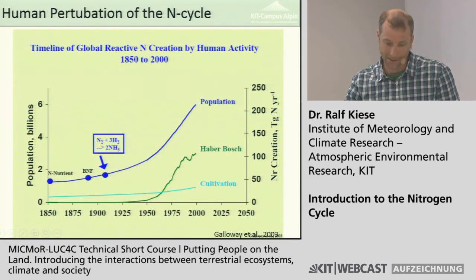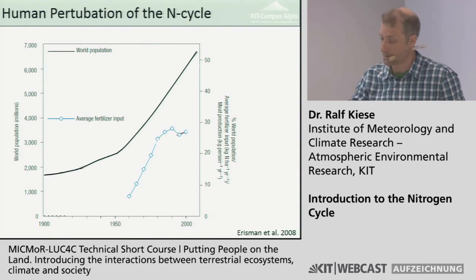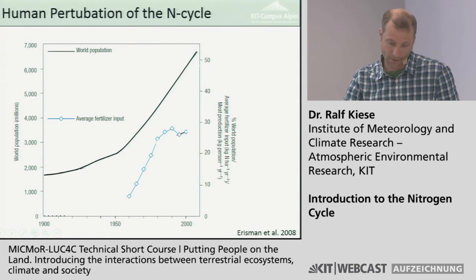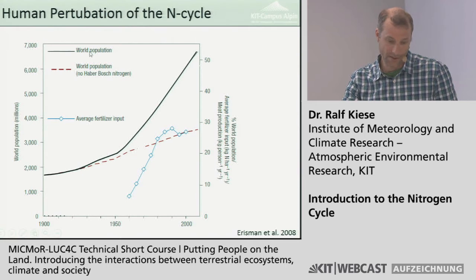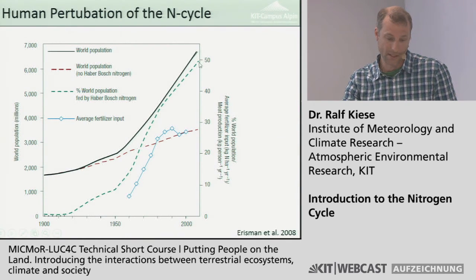With the Haber-Bosch process, chemical nitrogen production dramatically increased, enabling us to increase the global population. The nitrogen inputs to the natural situation have dramatically increased. If we look at numbers: this shows the world population increase and average fertilizer input increase from 1900 to 2000. The world population without Haber-Bosch would be only 30% of what we have now, meaning at the moment 50% of the world population relies on the Haber-Bosch process.